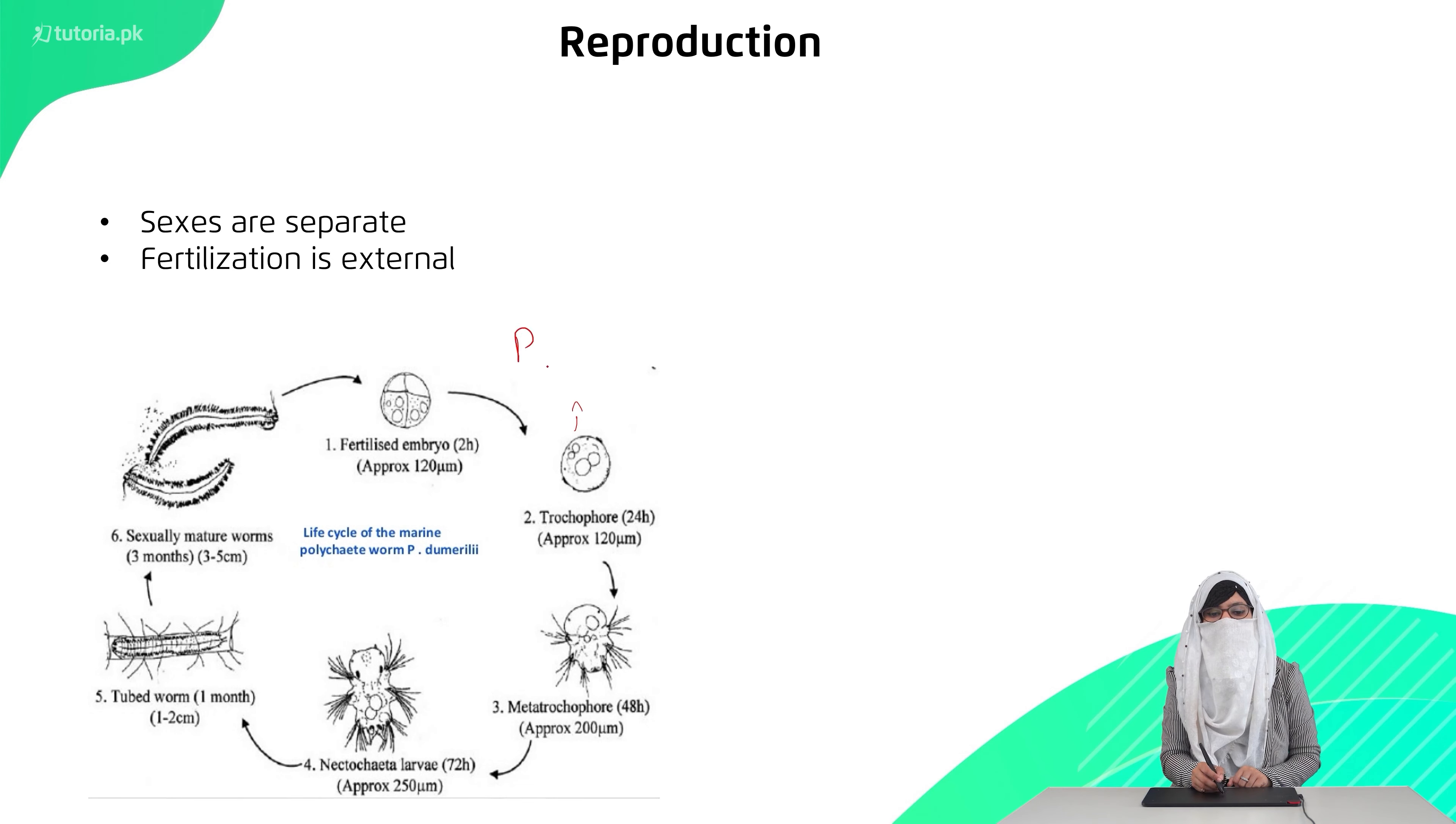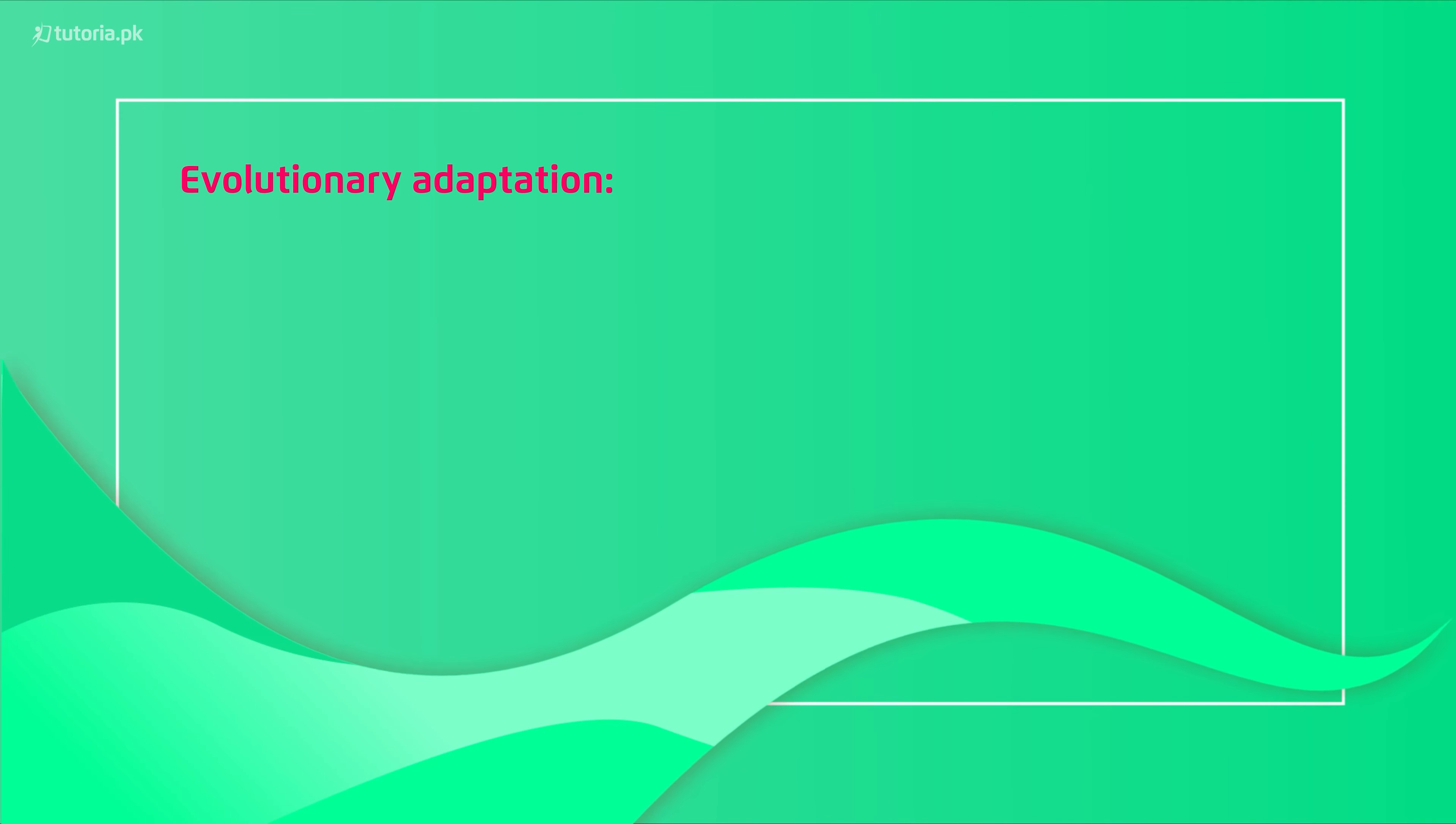Now, let's discuss these systems. First of all, we talk about the digestive system. The digestive system is again complete. It has the alimentary canal and anus present. The respiratory system is absent and respiration is through moist skin and diffusion process.